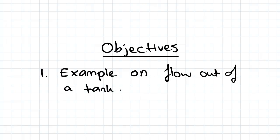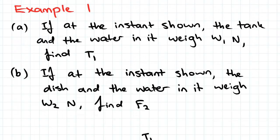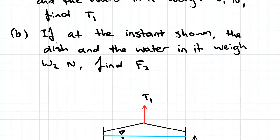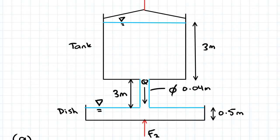Hi guys, continuing on from the previous video where we looked at an example on flow out of a tank. We did part A of that example, which was finding the tension in a cable supporting a tank which had a flow out of it. In part B, we're going to find the force holding up the dish which is receiving the flow out of the tank.